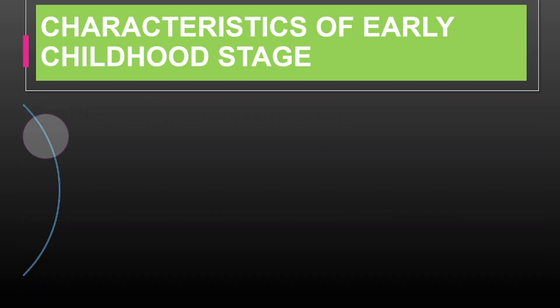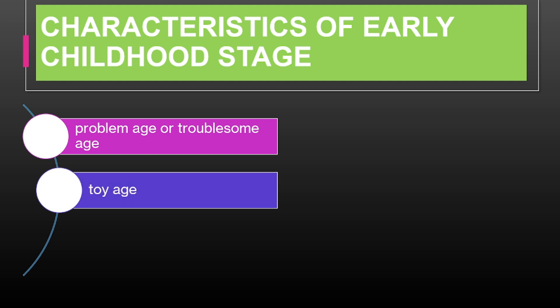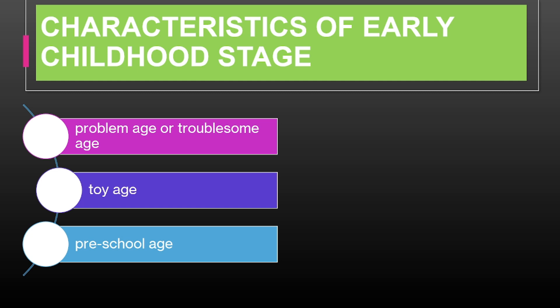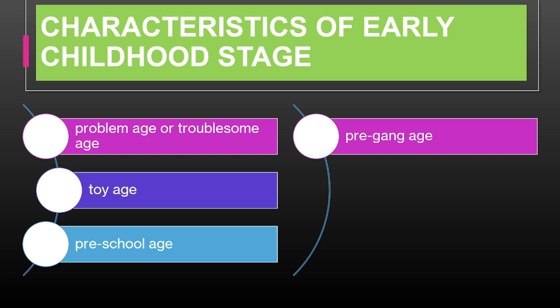We also describe this stage as Toy Age because play is central, and children use toys to explore their environment and learn new skills. Imagine a child using building blocks to create structures, which helps them develop spatial awareness and problem-solving skills. It is also called Preschool Age because this is the perfect time to be exposed to preschool — children start developing essential skills for school and engage in imaginative play. Additionally, this is the Pre-gang Age, where social interactions become more complex, but children are not yet forming tight-knit groups. A four-year-old might play with several friends but hasn't yet formed close friendships, as their social skills are just beginning to form.